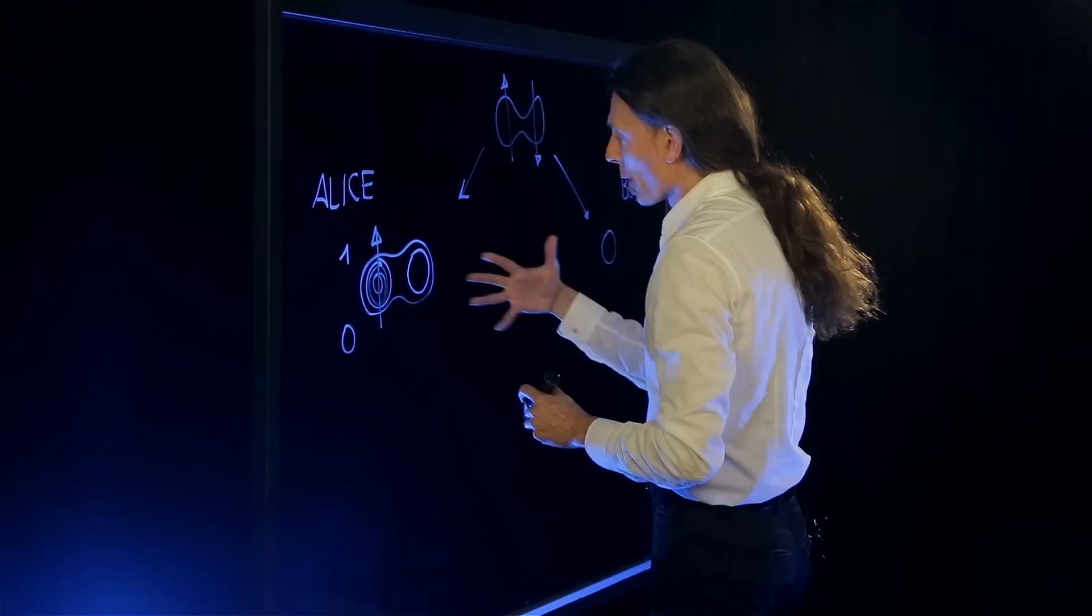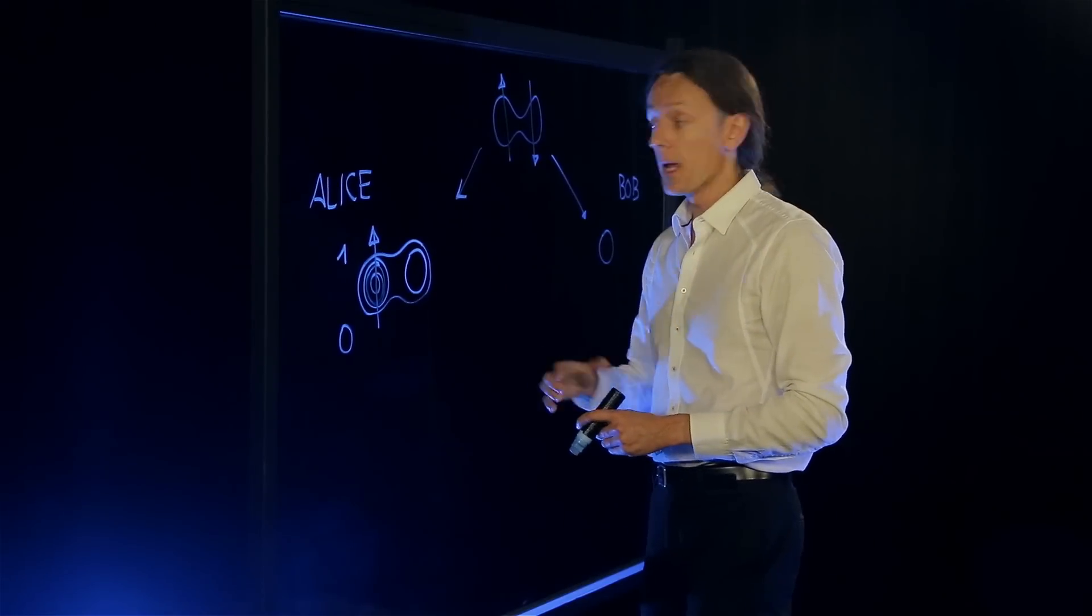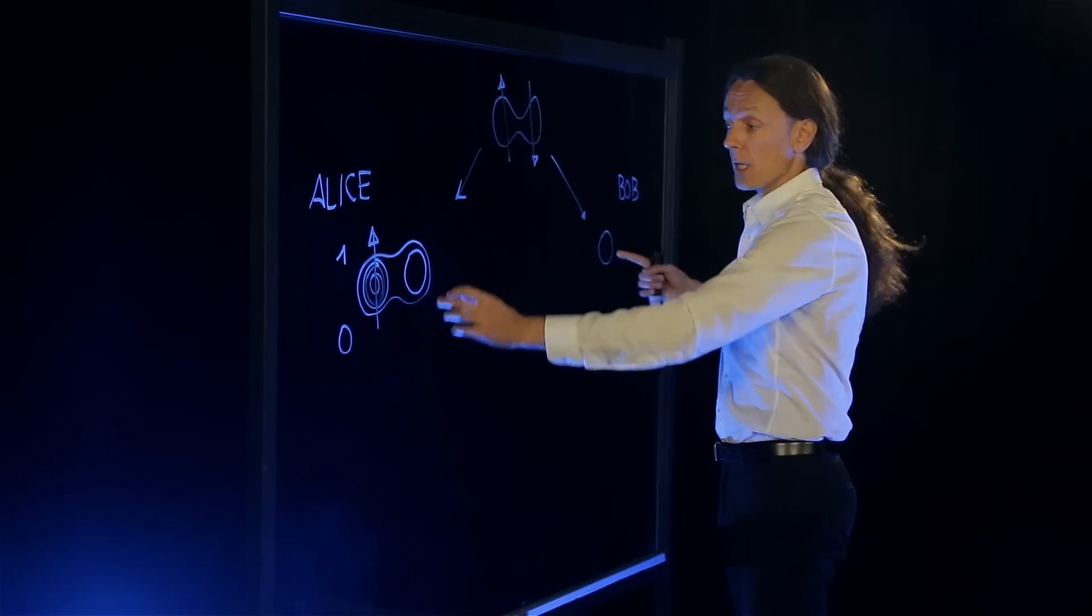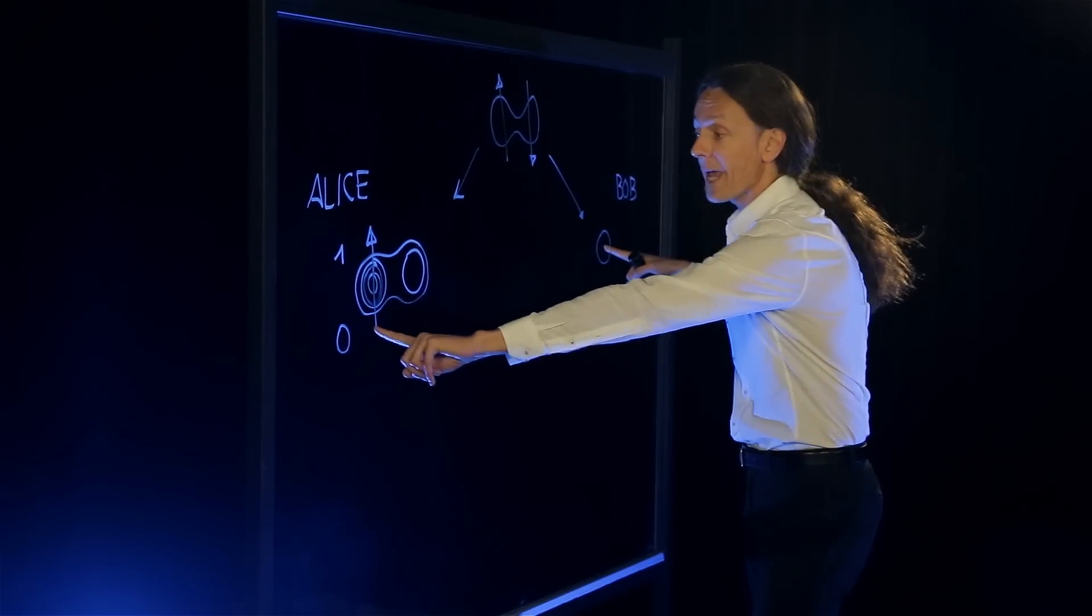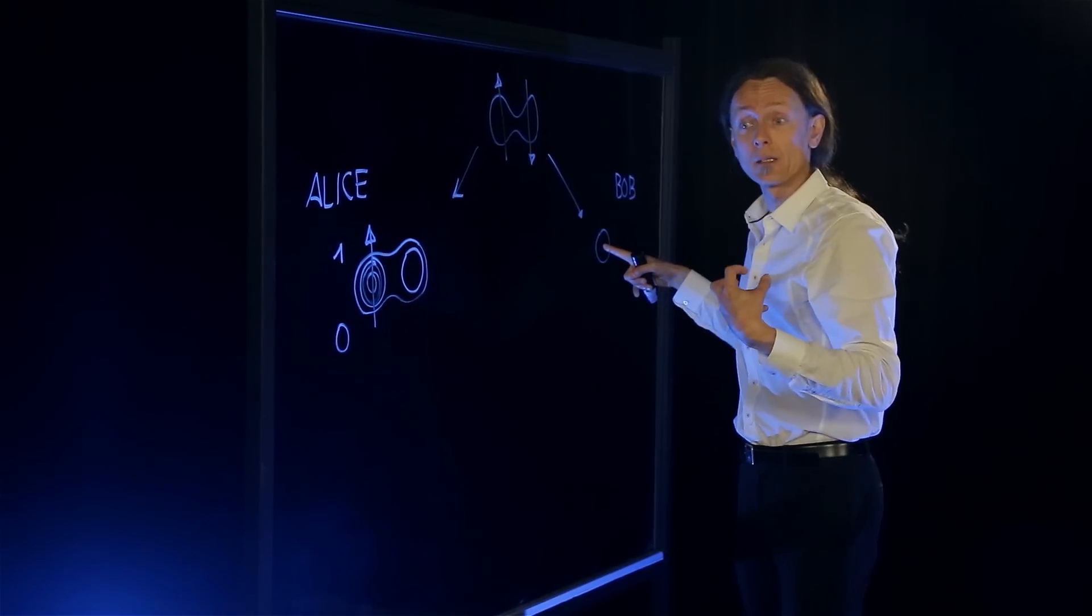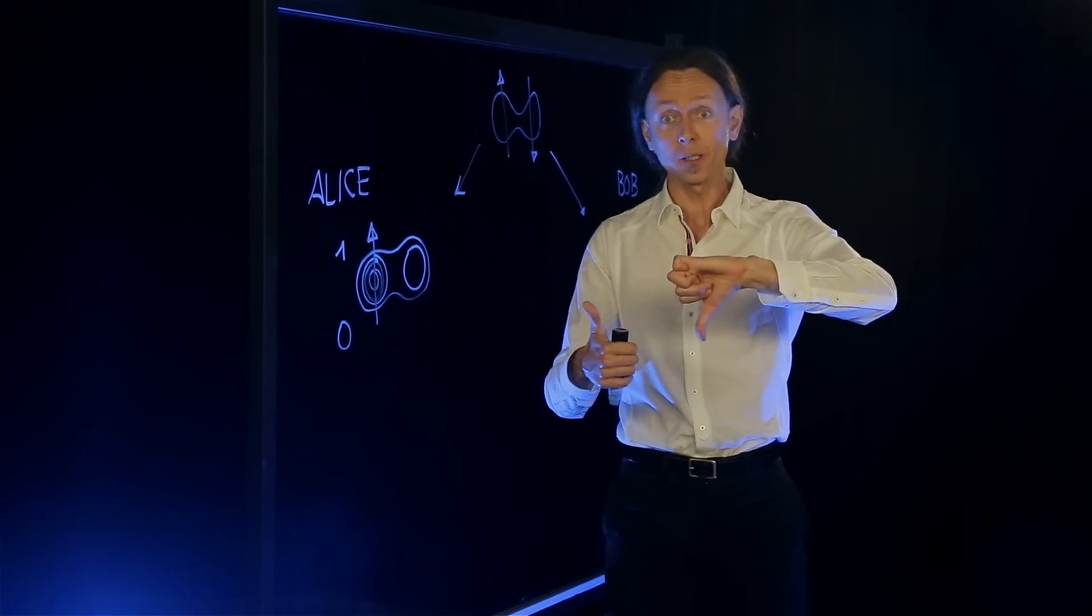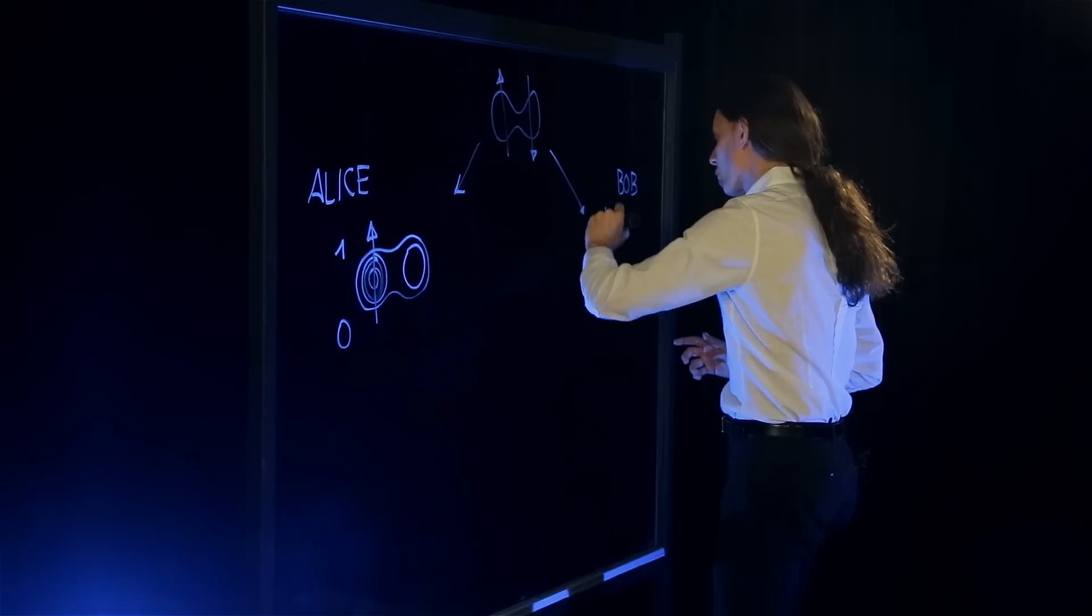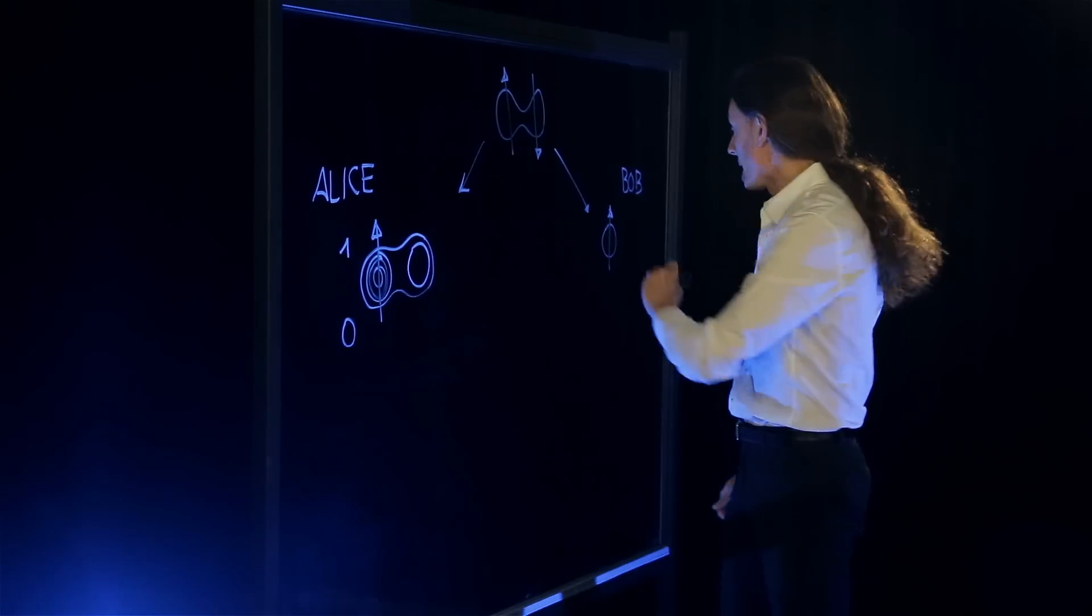And let's say, for example, that she finds that these two electrons are in opposite state. Now remember these two were created opposite at the start. So if these two are the opposite, that means that the electron that's in Bob's hands is now the same as the original electron that Alice had in her hands. So once the outcome of this measurement is that the two electrons are opposite, then Bob's electron is instantly created to be the same as the electron that Alice had at the start.